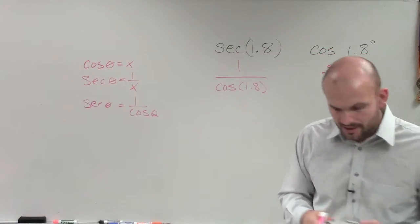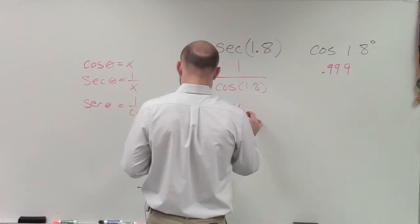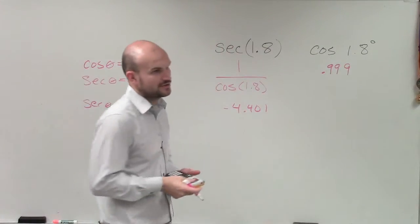Remember, it has to be in radian form. And therefore, it's going to give you negative 4.461. And that's just rounded to the third digit.